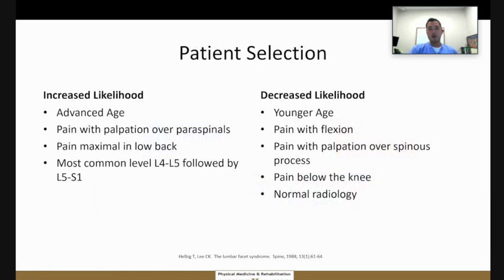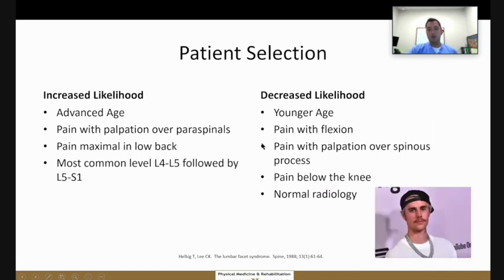When thinking about patients who may have facet-mediated pain, this is going to be your older age population. Pain is worse along the lumbar paraspinal muscles and in the low back. L4-5 and L5-S1 are the most common levels affected. It is less likely to have facet-mediated pain in younger patients, those with pain with flexion, pain right over the spinous process — where we're thinking more of the disc as the pain generator — or in patients who complain of pain below the knee.